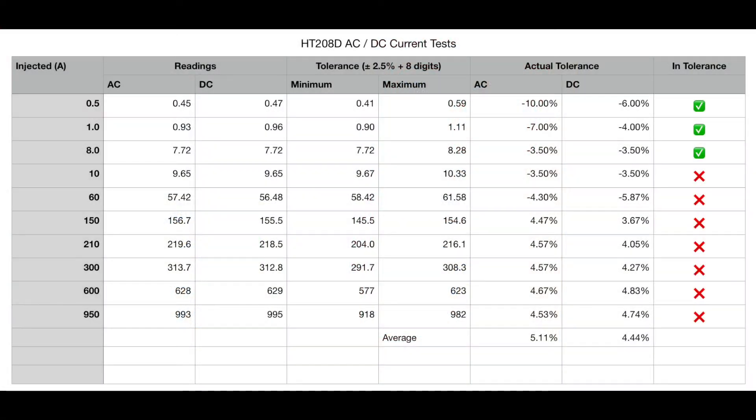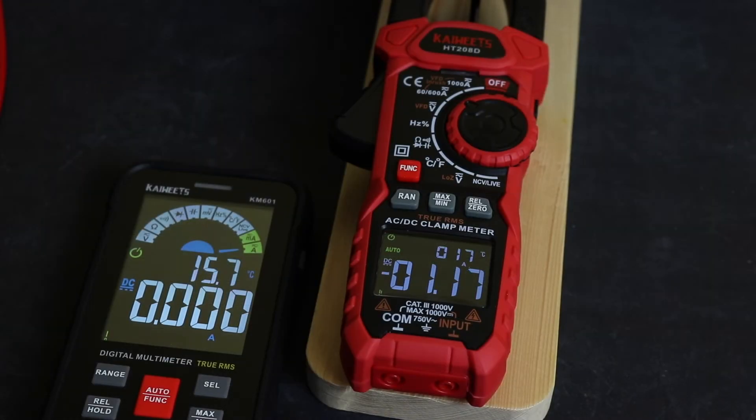In this first table, these are the usual measurements on a current clamp, extended out to the maximum range the instrument can read, which is 1000 amps. The Kaiwitz AC and DC are both the same tolerance for standard measurements, which is two and a half percent plus eight digits. You can see for the first three readings they're okay. The next reading is 10 amps, it starts to lose its accuracy there, and from there on in they are actually all out of specification. What's also interesting is that below 60 amps the readings tended to be lower than the specification, and above 60 amps the readings tend to be higher.